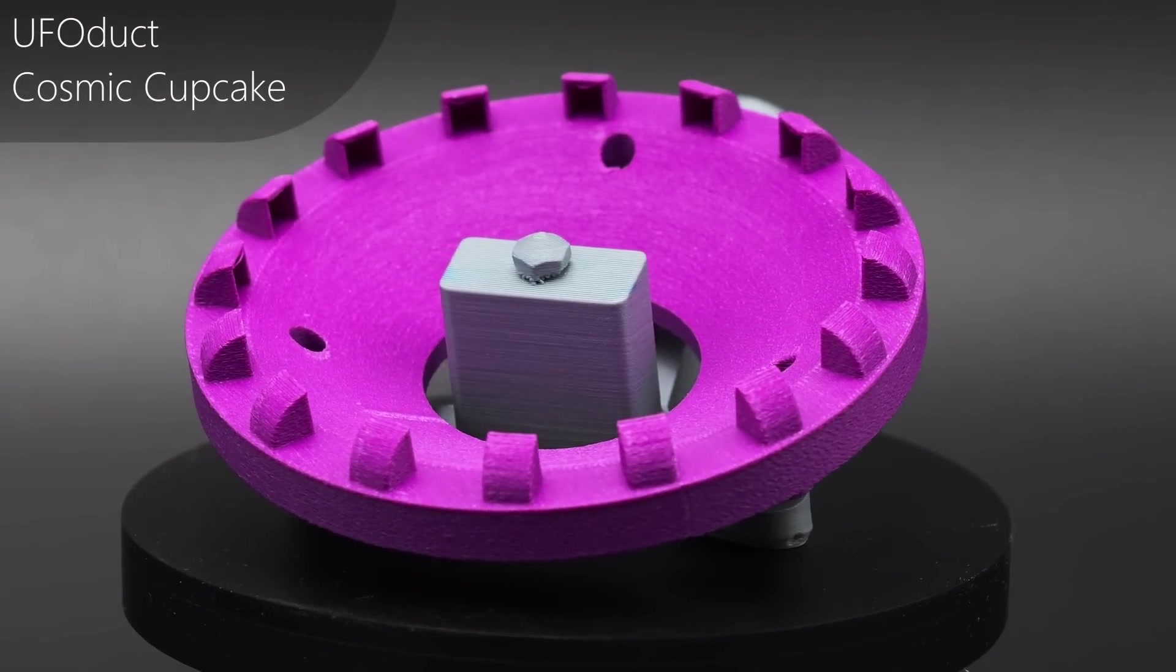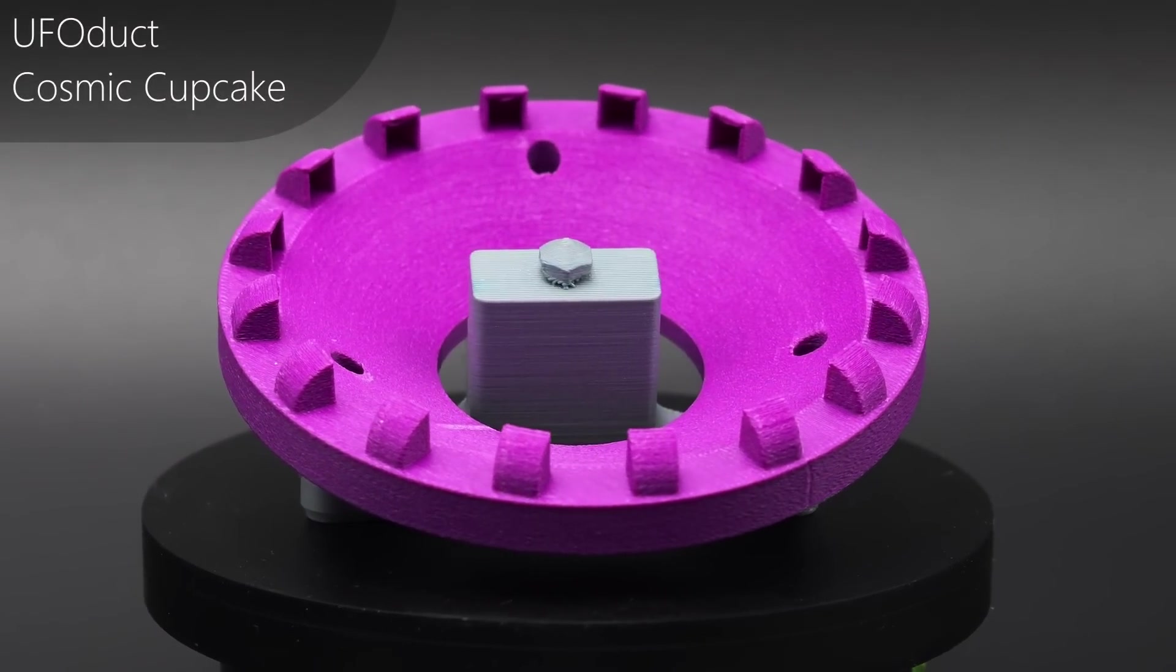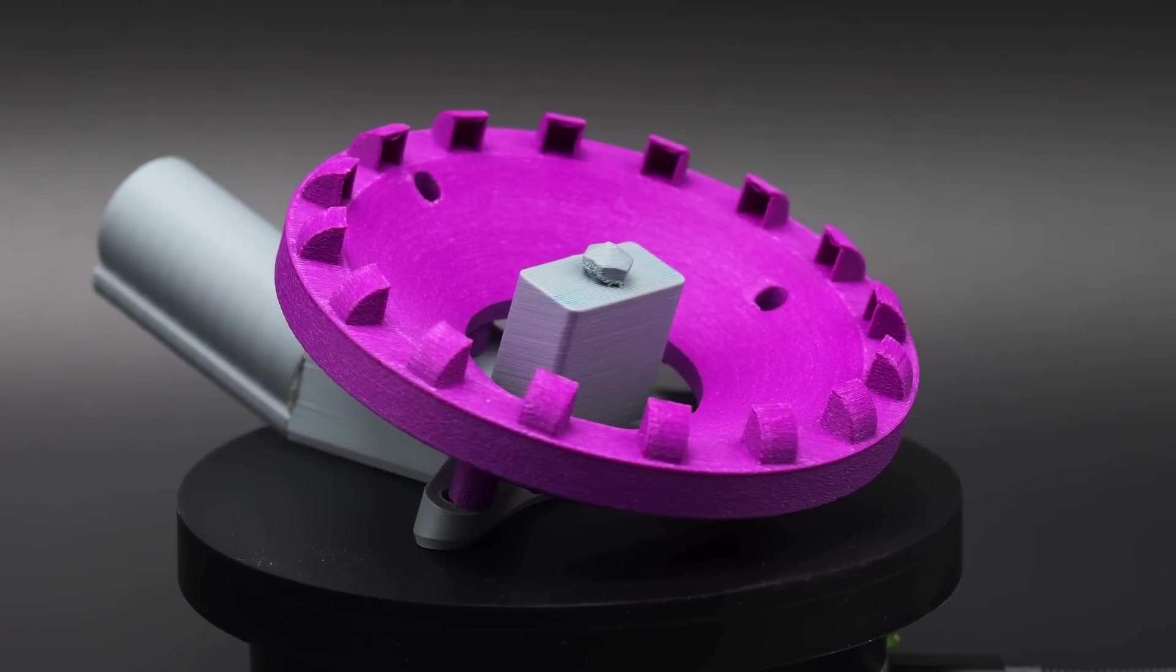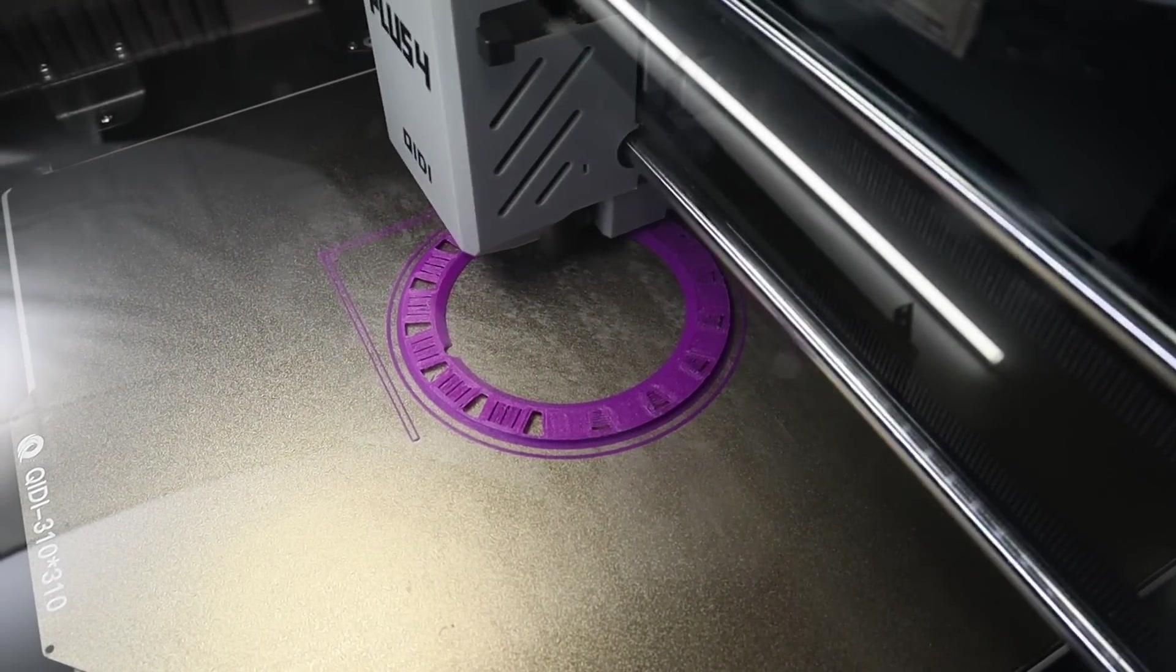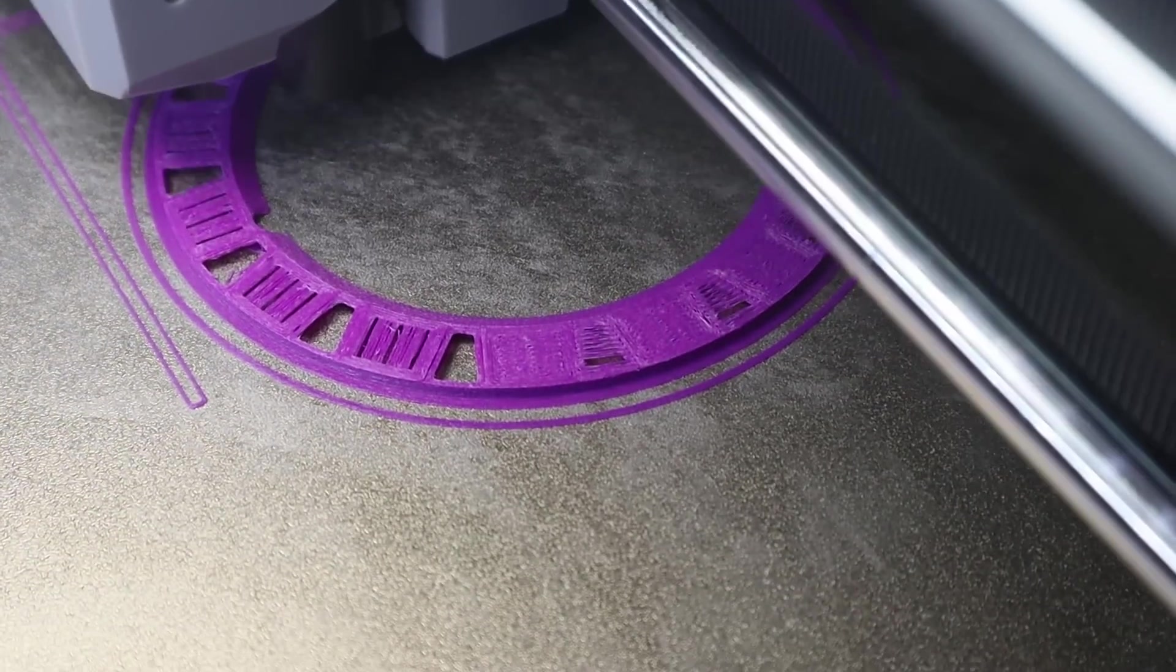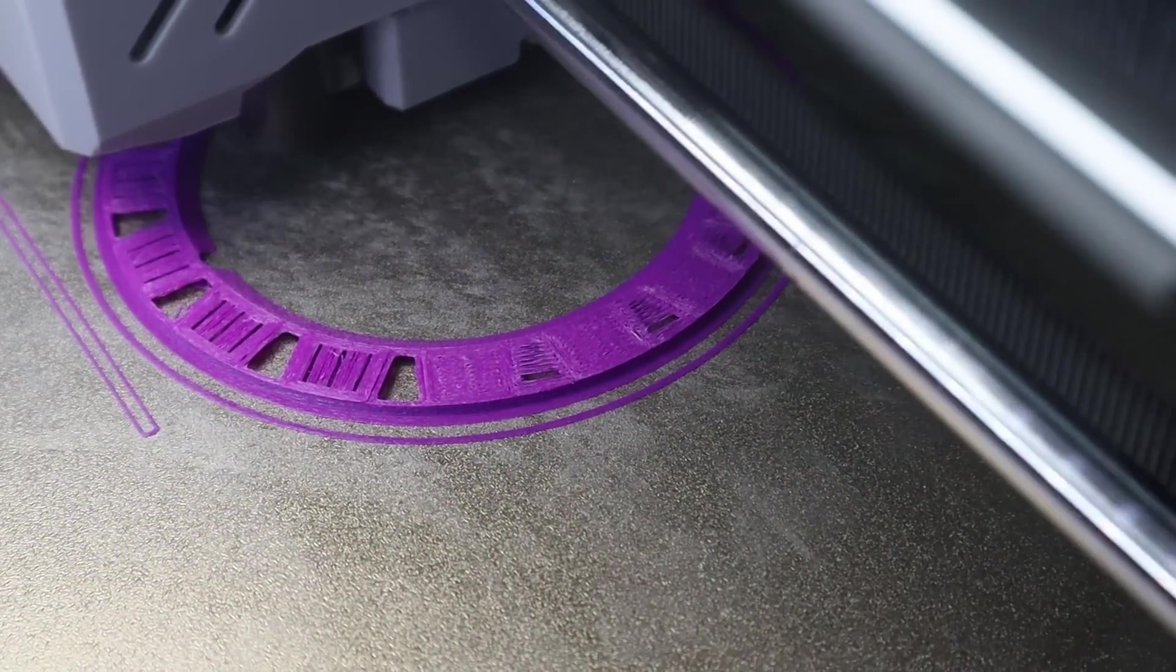Next up we have this one by Cosmic Cupcake called the UFO duct as well. This one made an appearance in one of the first videos where we found a way to bridge a circular shape which seems like it should be pretty straightforward but it actually wasn't and we needed to make some very minor changes to the model to get a good result. Since we learned after that the original intent was to print it right side up and the designer thinks that it could have made a difference so I did do that.